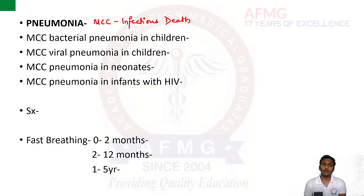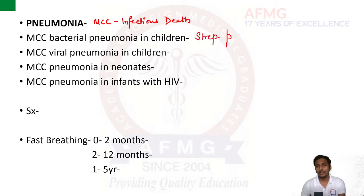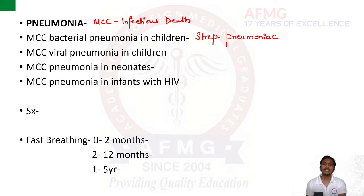There are some important one-liners you need to remember about pneumonia. The first: which is the most common cause of bacterial pneumonia in children? The answer is the same as in adults — Streptococcus pneumoniae, also known as pneumococcus. It is the most common cause of bacterial pneumonia in both children and adults.